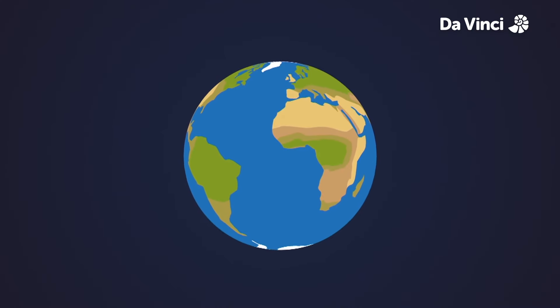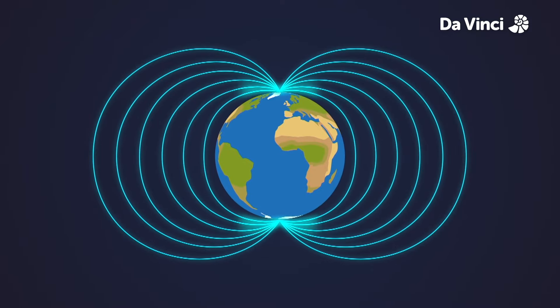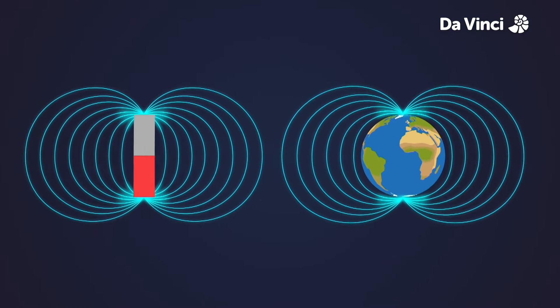Like all magnets, our Earth has two magnetic poles where the magnetic force is the strongest.